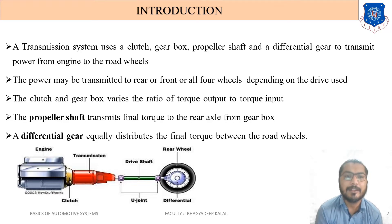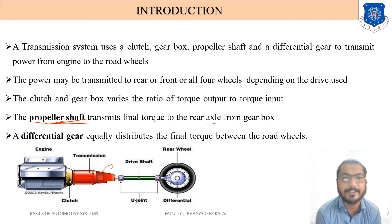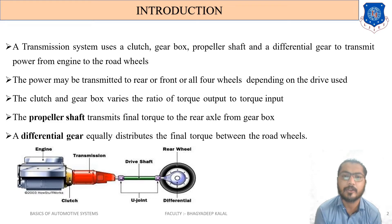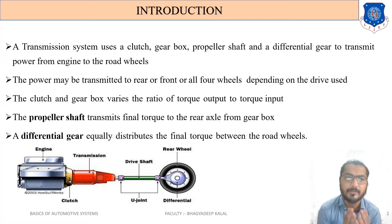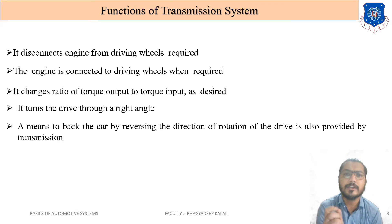The propeller shaft transmits the final drive torque to the rear axle from the gearbox. The differential gear equally distributes the final torque — which comes from the gearbox — to the road wheels. Another function of the differential gear is to differentiate the speed when the vehicle is taking a turn.